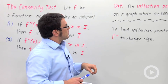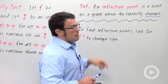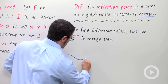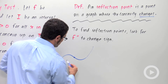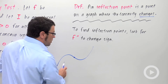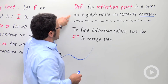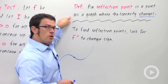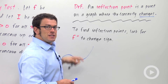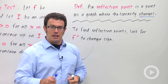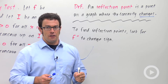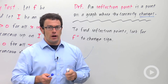Now there's one other term I need to tell you about, and that's inflection point. It is possible for a graph to change concavity — for example, something like this, where the graph is changing from concave down to concave up. The point where that happens is called an inflection point — it's a point on the graph where the concavity changes. And the way you check for that is you look for changes in sign of the second derivative. Where the second derivative is positive, the graph is concave up; where it's negative, the graph is concave down; and when that sign changes, you have an inflection point.